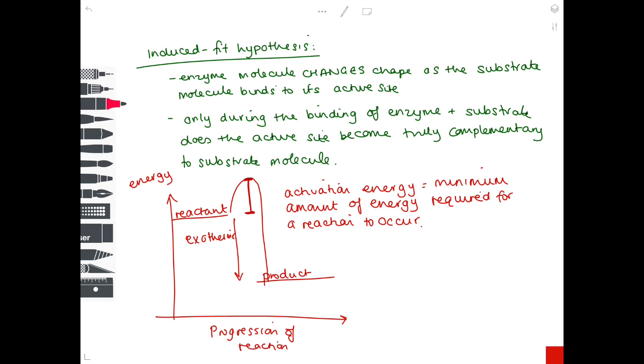So how do enzymes actually work? Well, they lower the activation energy, so they lower the minimum amount of energy required for a reaction to occur.